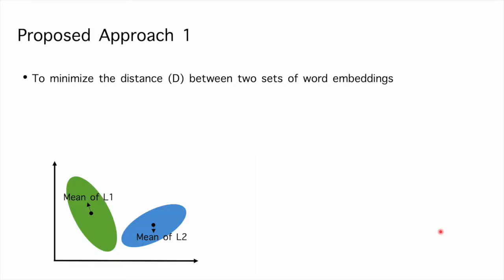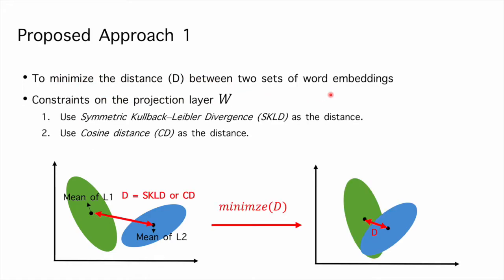Also, we propose some methods to train the code-switching language model without using real or synthetic code-switching text. As we mentioned previously, the overlapping spaces may help on code-switching language modeling. The first proposal is to minimize the distance between two language spaces. We use symmetric KL divergence and cosine distance as the metric. Both of them are treated as a regularization term during optimizing code-switching language model.